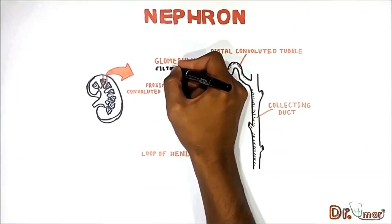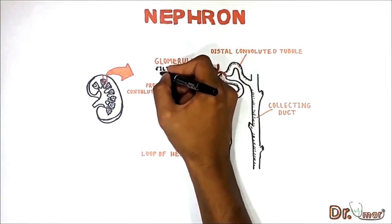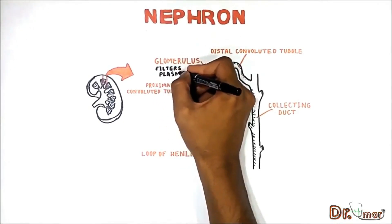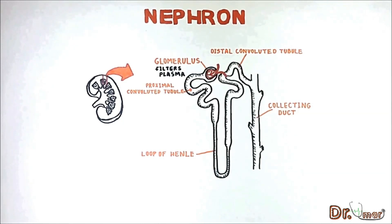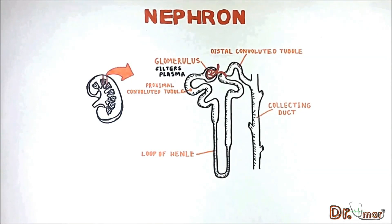The glomerulus is a capillary net that filters plasma, making ultrafiltrate, and this process is called filtration. Upon entering the proximal convoluted tubule, ultrafiltrate is called tubular fluid.